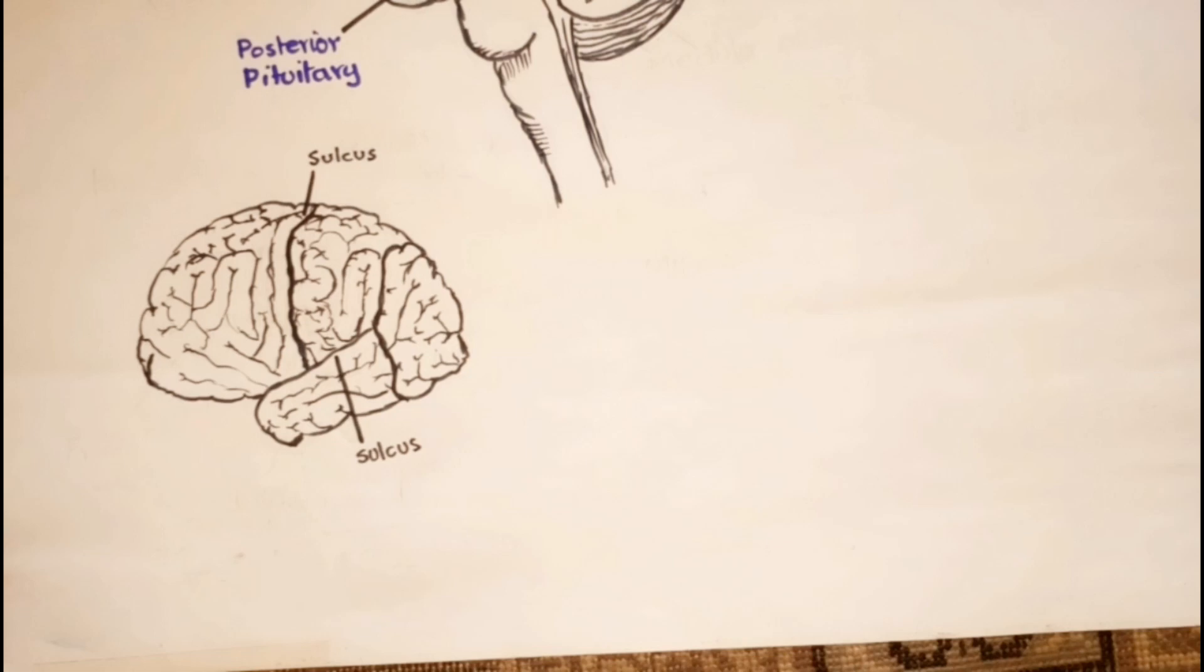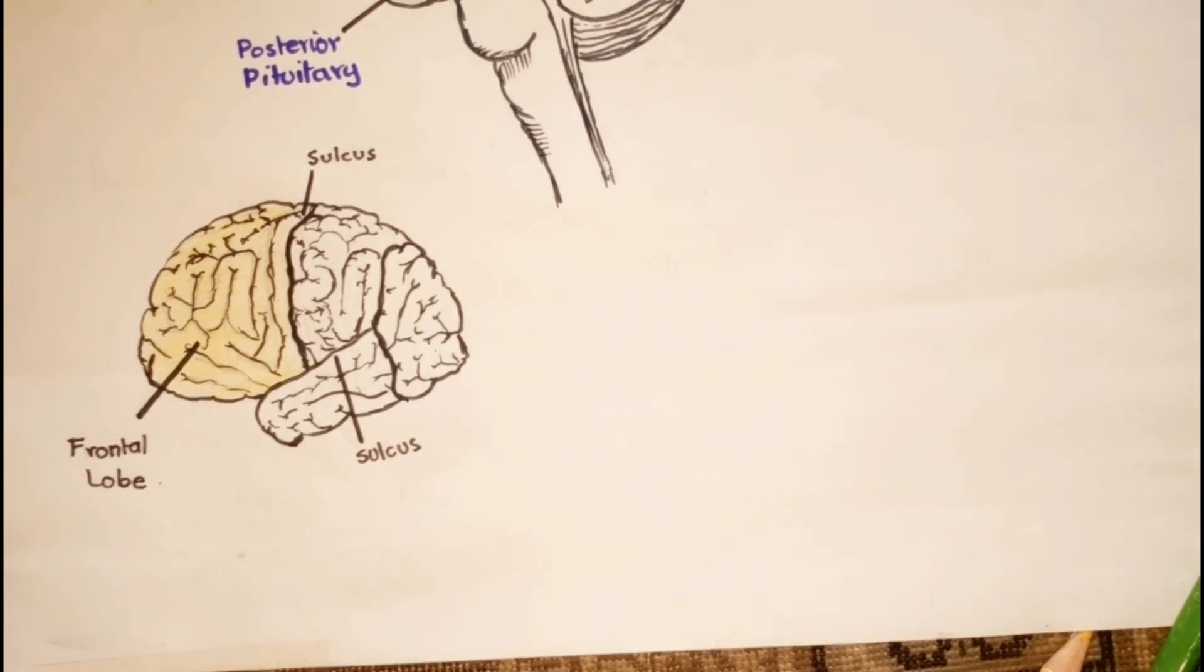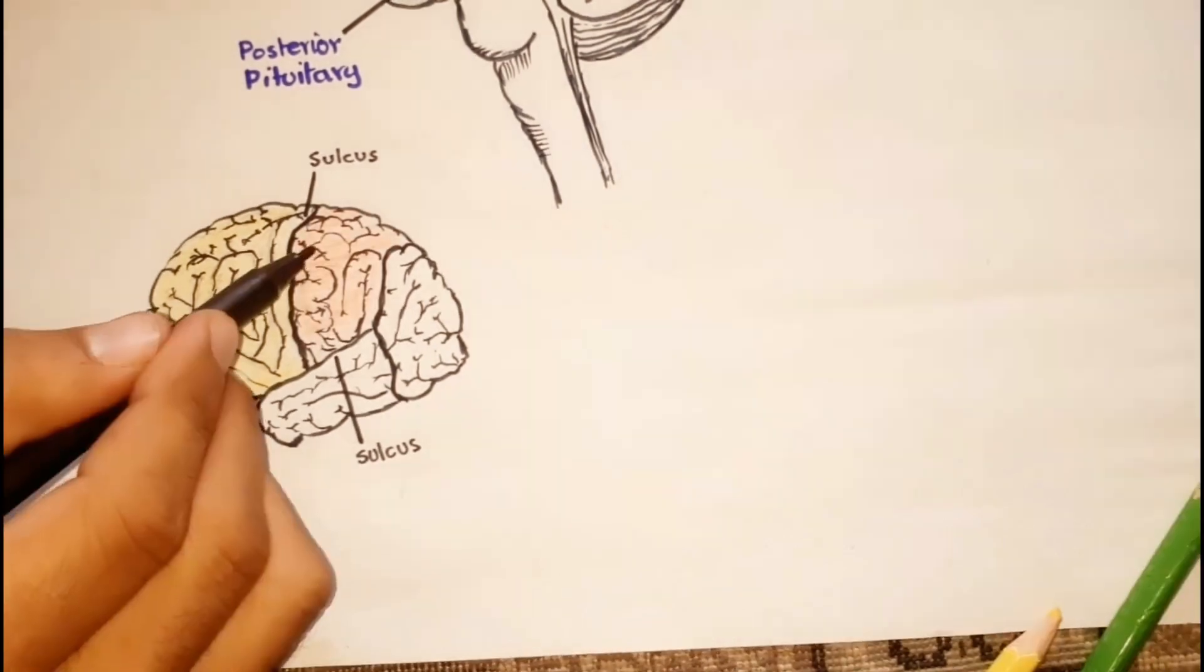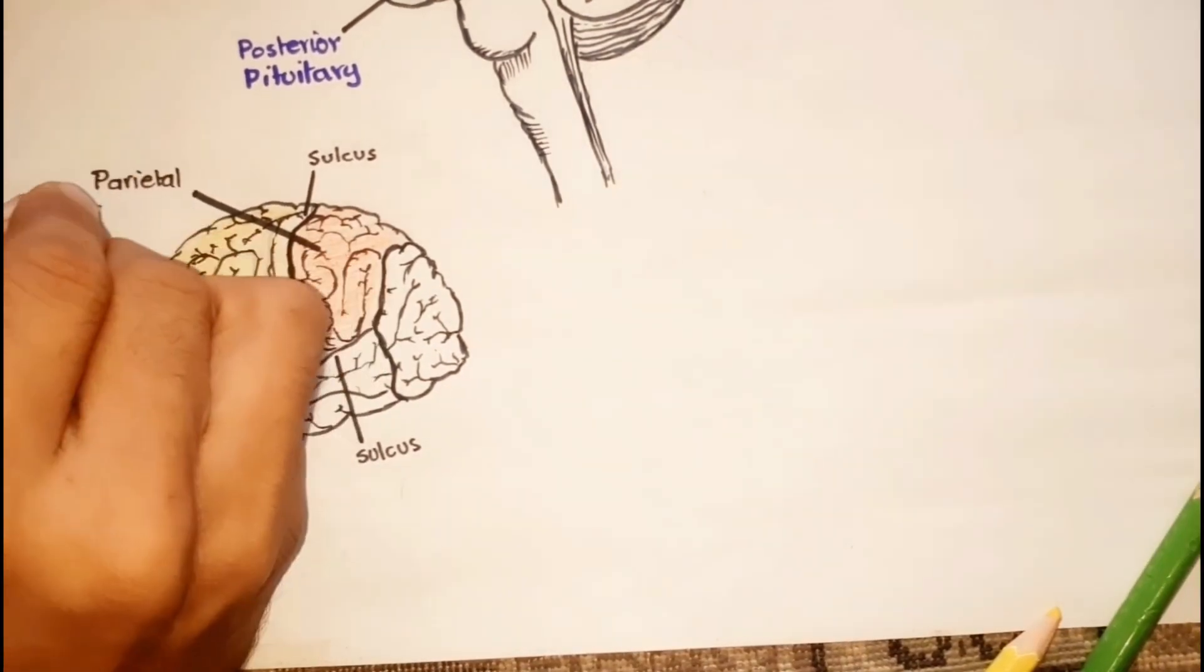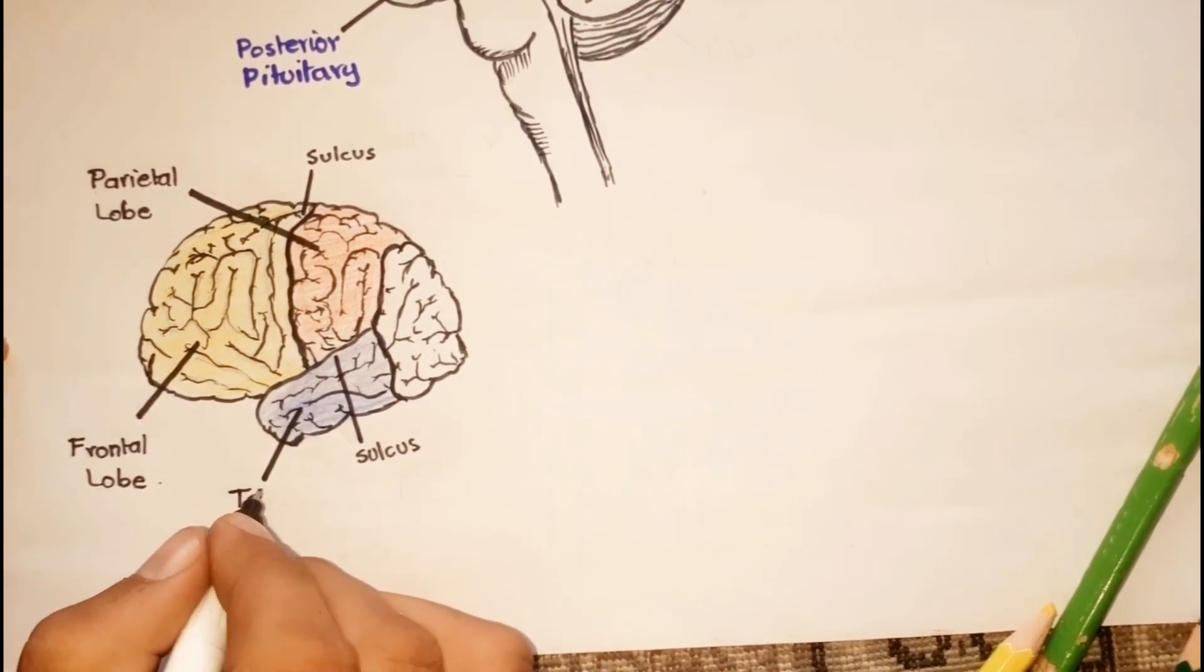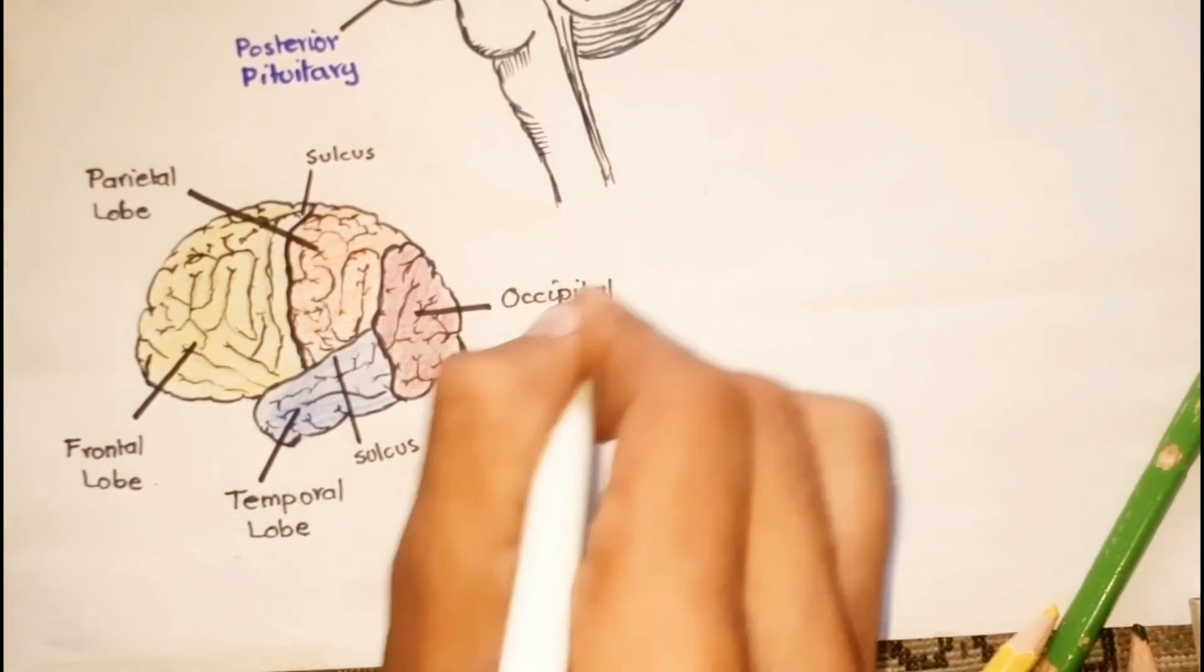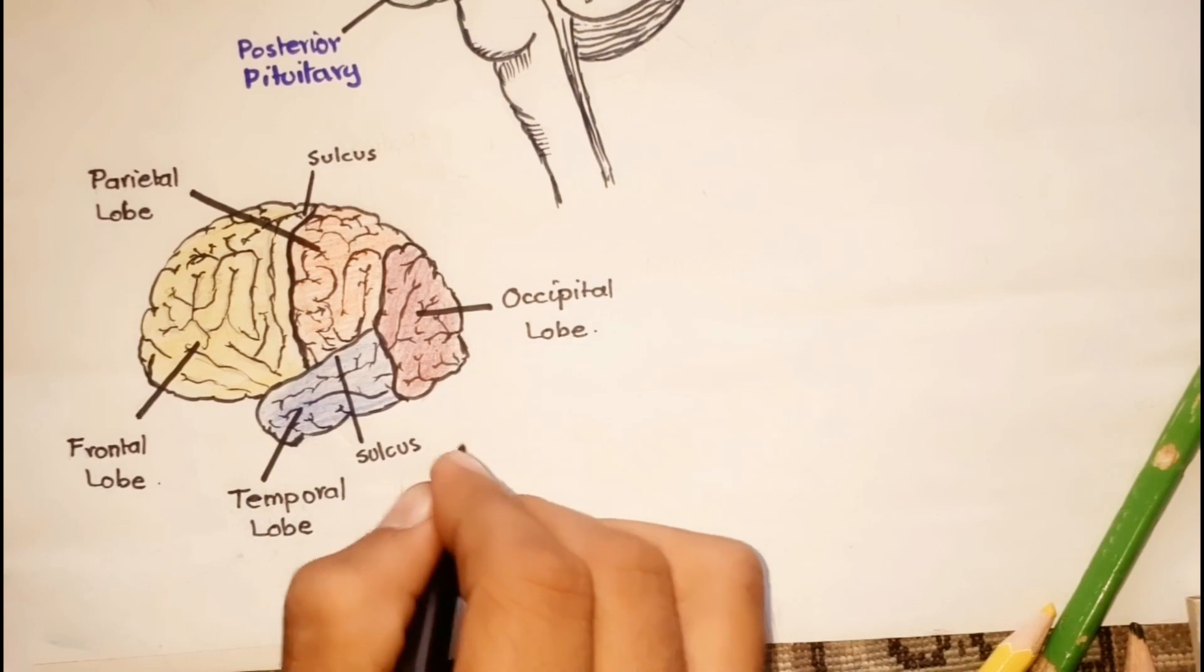This is a side view of the cerebrum. This lobe is called the frontal lobe, posterior to the frontal bone. This lobe is called the parietal lobe. This is the temporal lobe, present underneath the temporal bone. This lobe is called the occipital lobe because of the occipital bone.